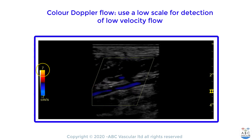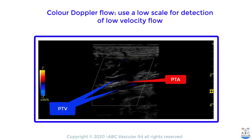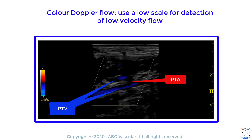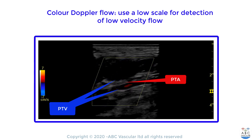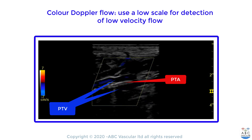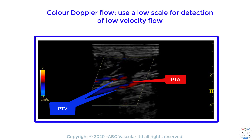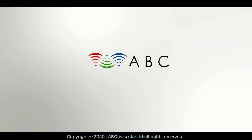As shown in this video, while there is color doppler flow filling the satellite posterior tibial veins, there is no color doppler flow within the posterior tibial artery, confirming the presence of an arterial occlusion. Thanks for joining ABC vascular ultrasound.